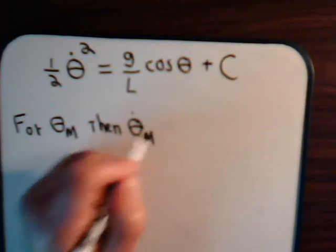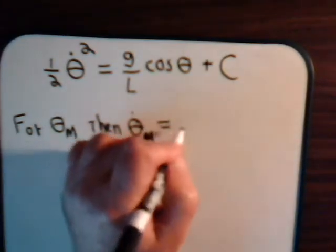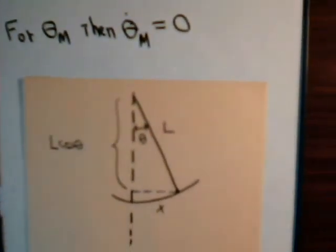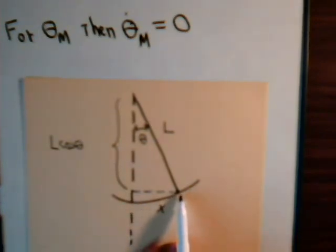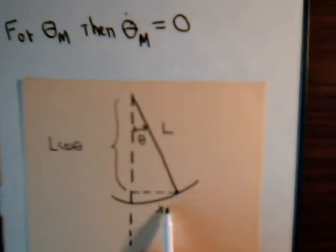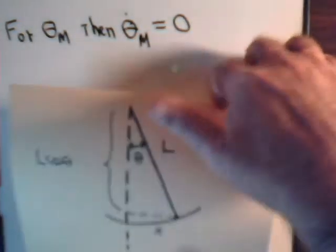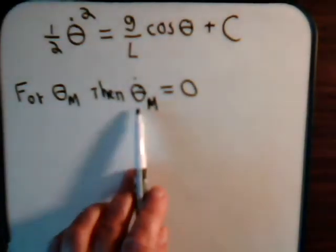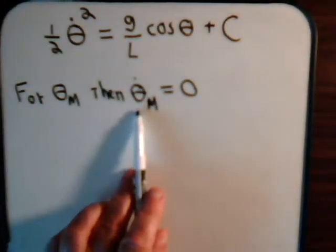Then theta-dot_m equals zero. That's because the pendulum goes to here, makes its maximum displacement, then it stops and swings in the other direction. So when it stops, the angular velocity is zero.